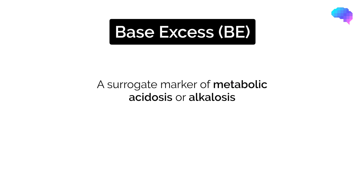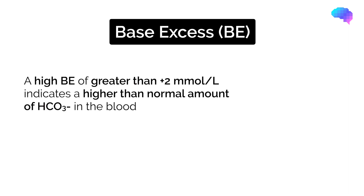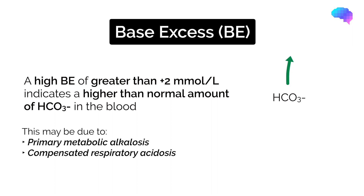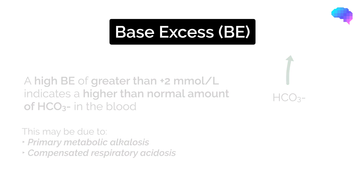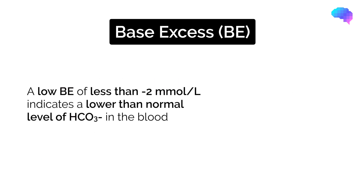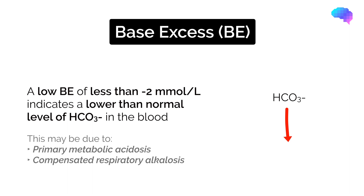The base excess is another surrogate marker of metabolic acidosis or alkalosis. A high base excess of greater than 2 millimoles per liter indicates that there is a higher than normal amount of HCO3 in the blood, which may be due to a primary metabolic alkalosis or a compensated respiratory acidosis. A low base excess of less than negative 2 millimoles per liter indicates a lower than normal amount of HCO3 in the blood, suggesting either a primary metabolic acidosis or a compensated respiratory alkalosis.